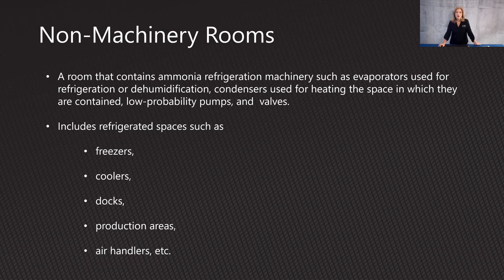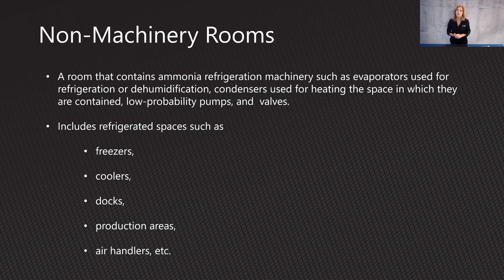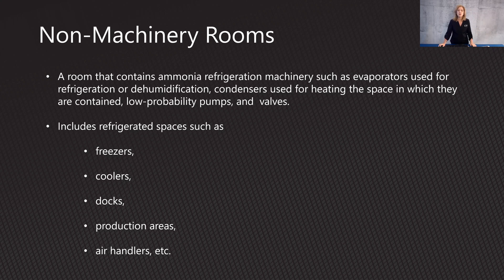Now we're going to talk about outside of your machinery room. There are still places — if you've got a pump, a valve, a condenser, anything where ammonia could possibly leak — you're required to have detection. Examples would be freezers, coolers, your production areas, and air handlers. These are important because this is where your people are, and you want to protect them from any potential ammonia leak.